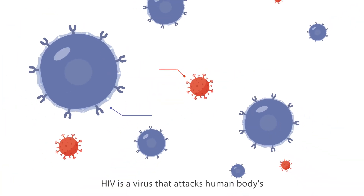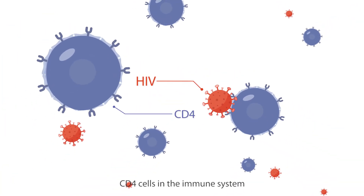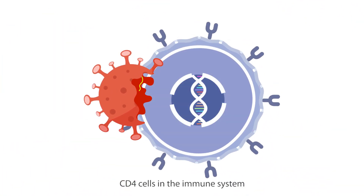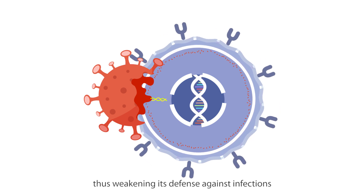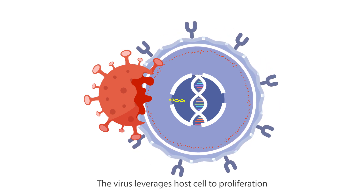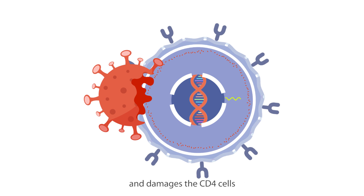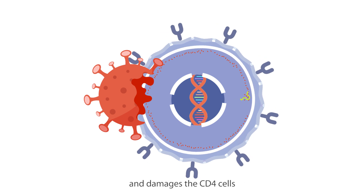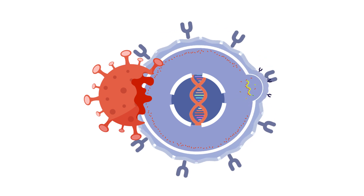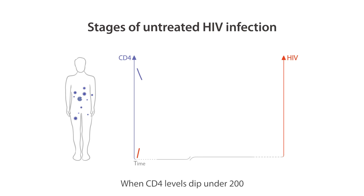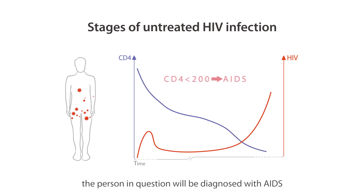HIV is a virus that attacks the human body's CD4 cells in the immune system, thus weakening its defense against infections. The virus leverages the host cell to proliferate and damage the CD4 cells. When CD4 levels dip under 200, the person in question will be diagnosed with AIDS.